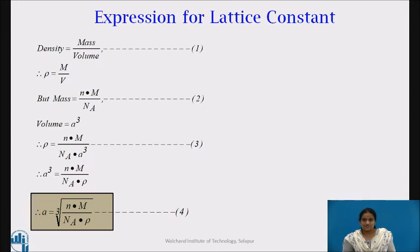Now let's derive expression for lattice constant. We know that the equation for density which is equal to mass upon volume, then mass is given by N that is number of atoms per unit cell multiplied by molecular weight and divided by Avogadro's number. And volume is given by A cubed.